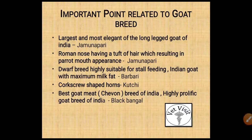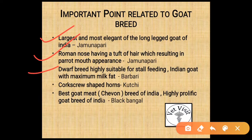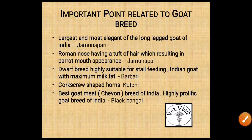Important exam points: 'Largest and most elegant long-legged goat of India' — answer: Jamunapuri. 'Roman nose with a tuft of hair resulting in parrot mouth appearance' — answer: Jamunapuri. 'Dwarf breed highly suitable for stall feeding, Indian goat with maximum milk fat' — answer: Barbari. 'Screw shaped horns' — answer: Kachi. 'Best goat meat breed of India and highly prolific goat breed of India' — answer: Black Bengal.